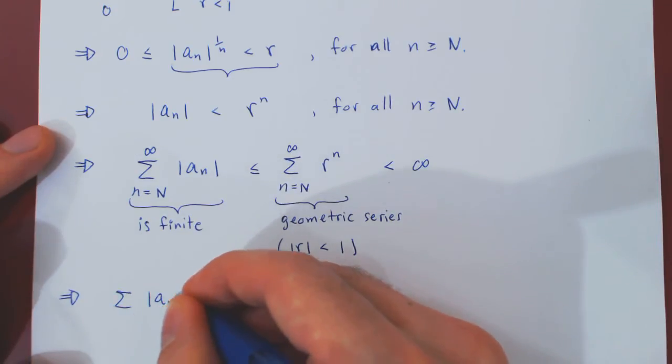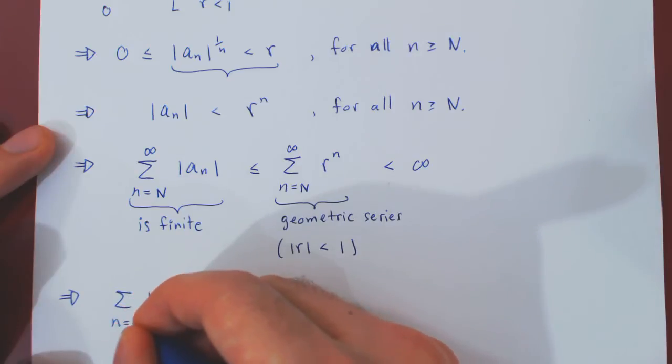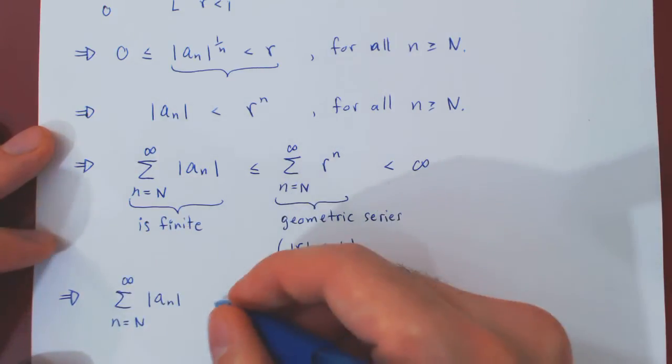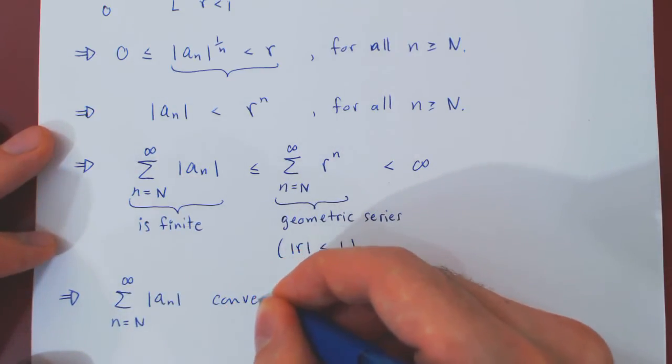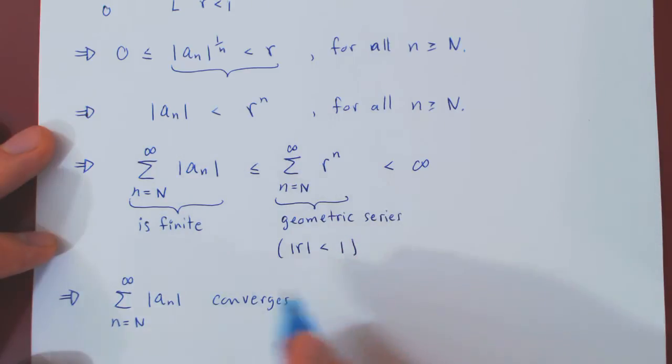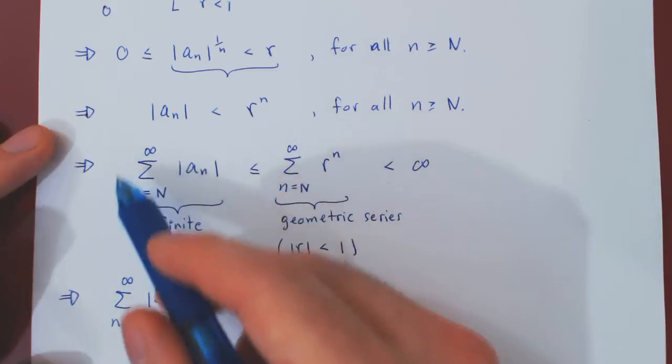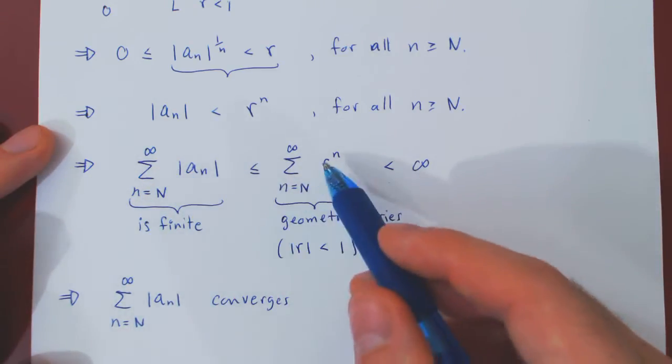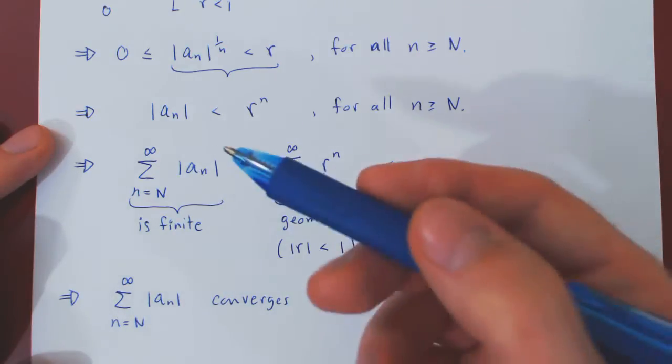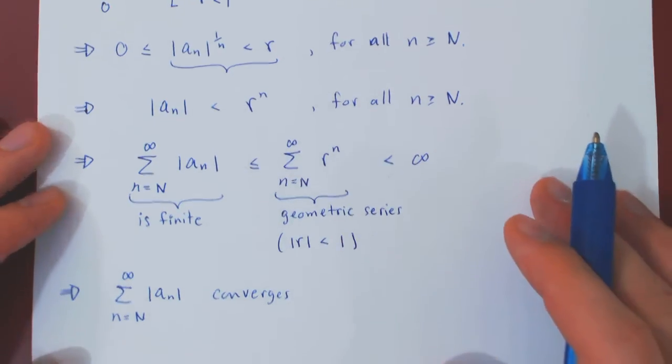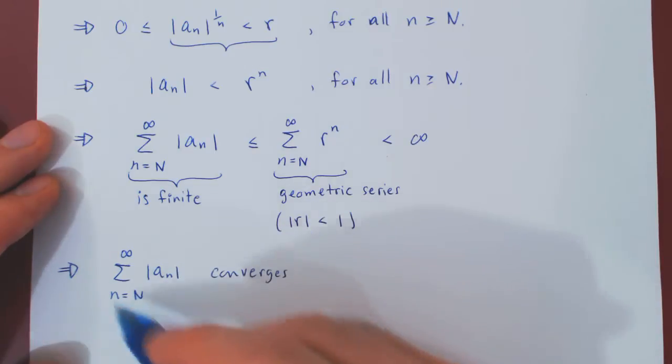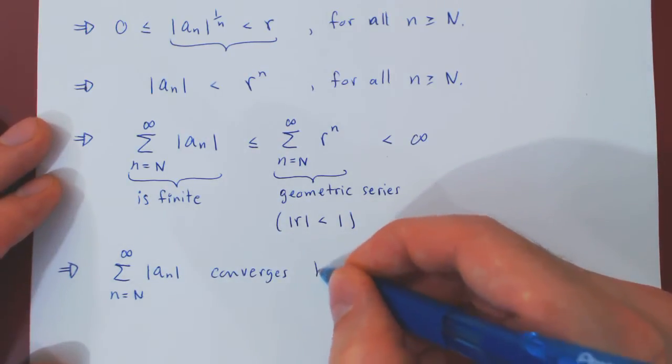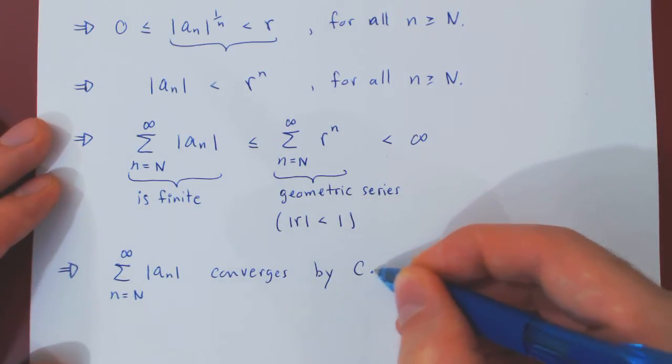So the series of a_n in absolute value, from uppercase N to infinity, converges. And we could quote here the comparison test. We have compared this series to this series, which converges, and as we have a series of non-negative terms, the comparison test already applies, so the series here converges by the comparison test, which we can just write CT.